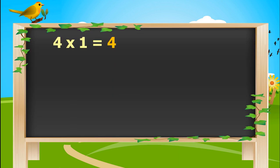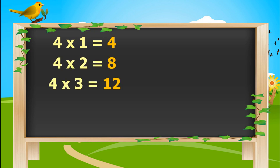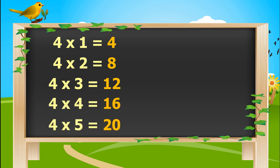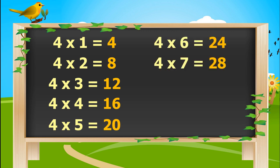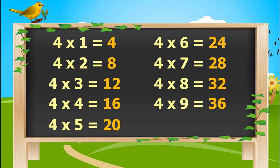4 times 1 is 4. 4 times 2's are 8. 4 times 3's are 12. 4 times 4's are 16. 4 times 5's are 20. 4 times 6's are 24. 4 times 7's are 28. 4 times 8's are 32. 4 times 9's are 36. 4 times 10's are 40.